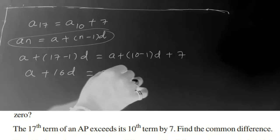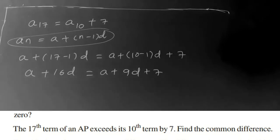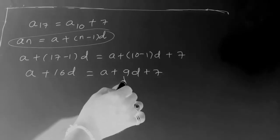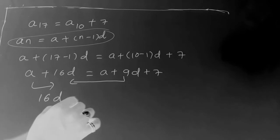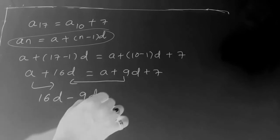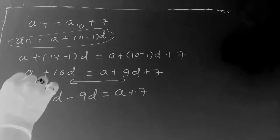Now you see here, bring all d terms to one side, remaining terms to another side. So 16d minus 9d, that is equal to a plus 7. Plus a is going to right side, it becomes minus a.